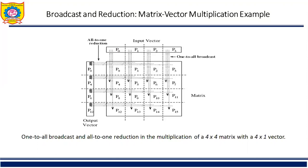Since all the rows of the matrix must be multiplied with the vector, each process needs the element of the vector residing in the topmost process of its column. Hence, before computing the matrix vector product, each column of nodes performs a one to all broadcast of the vector element with the topmost process of the column as the source. This is done by treating each column of the n by n mesh as an n node linear array and simultaneously applying the linear array broadcast procedure to all columns.